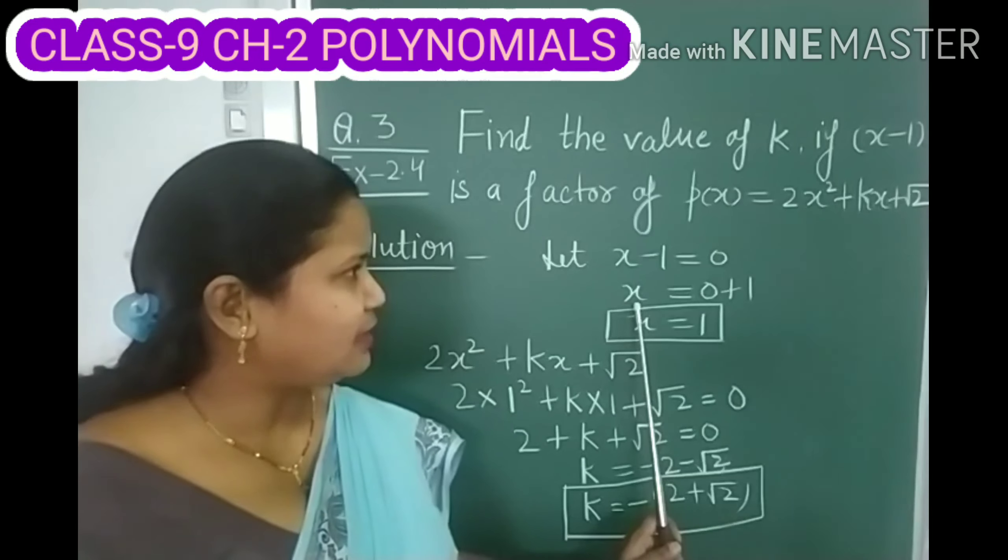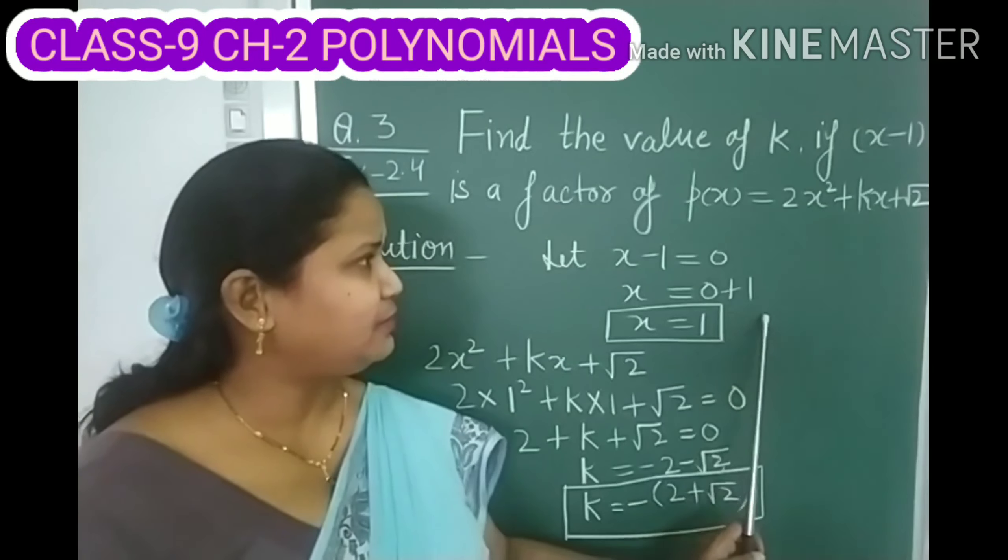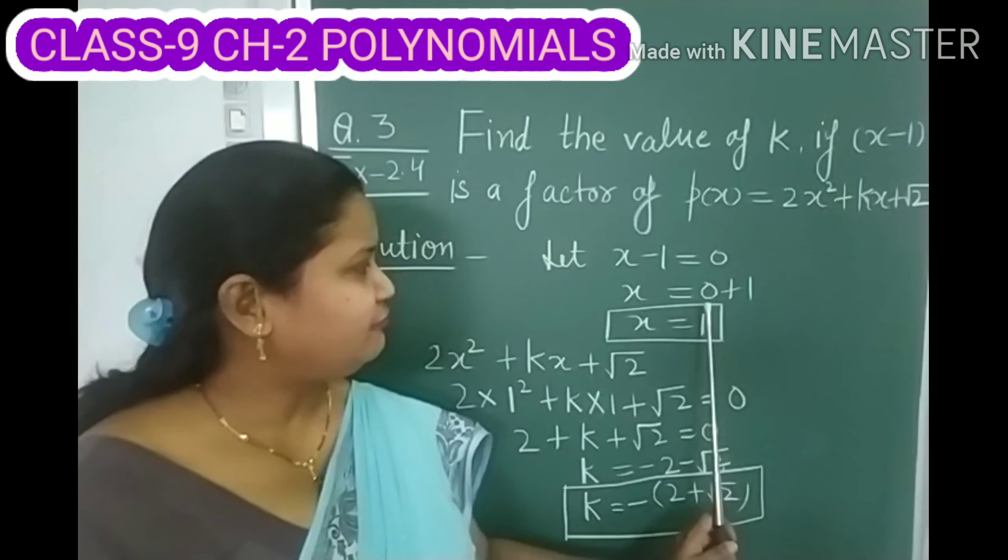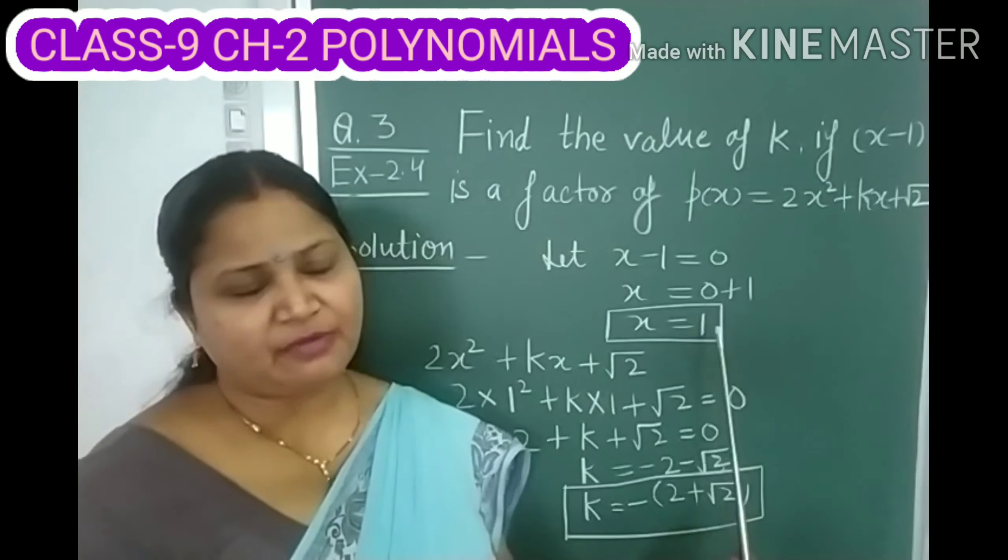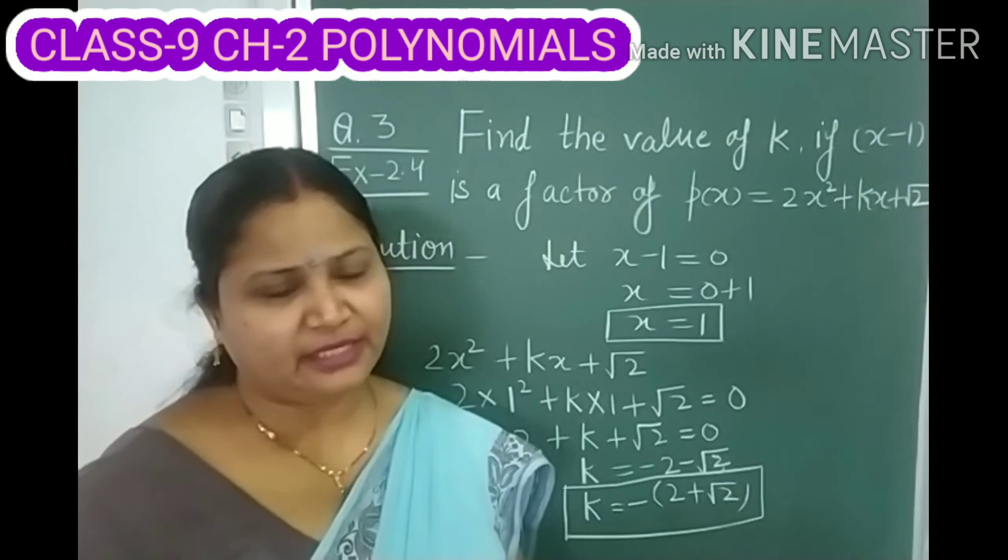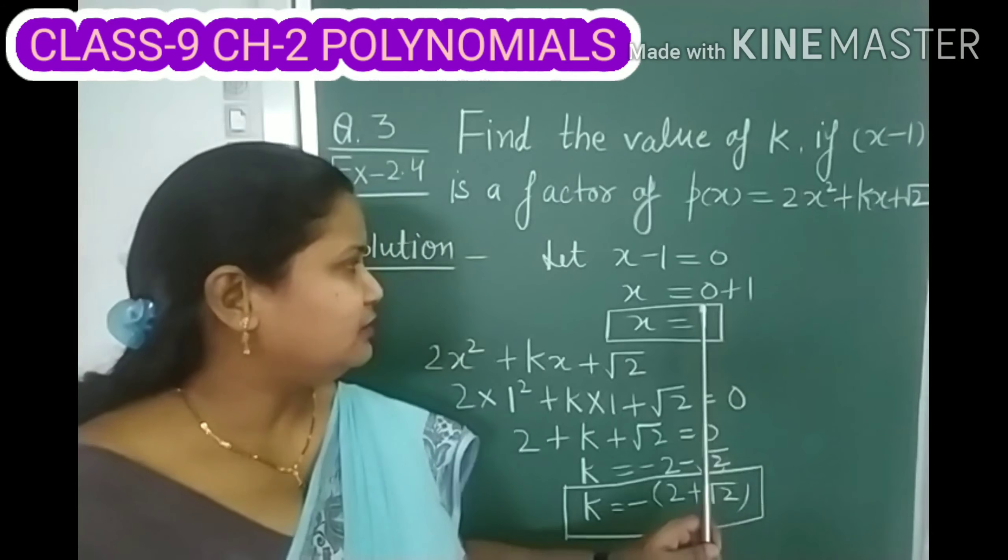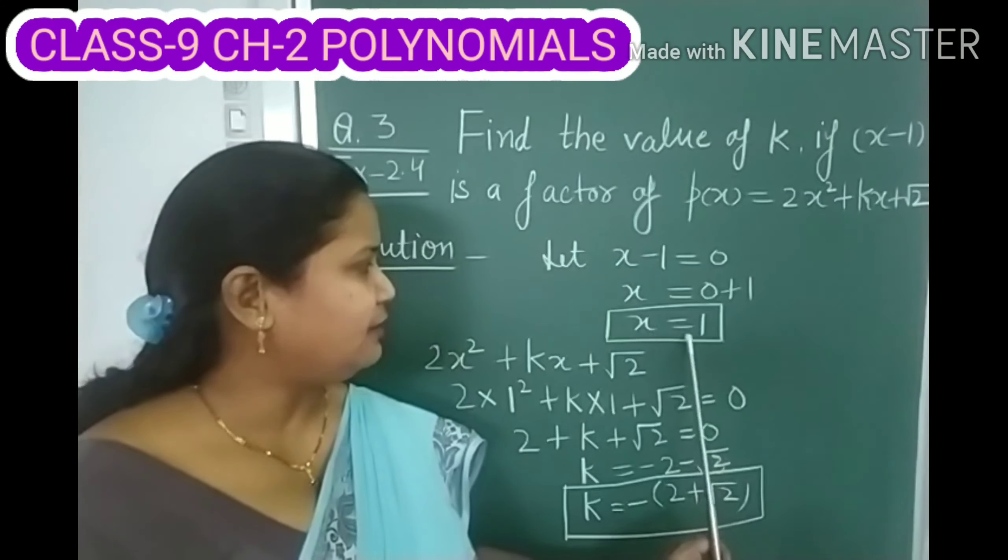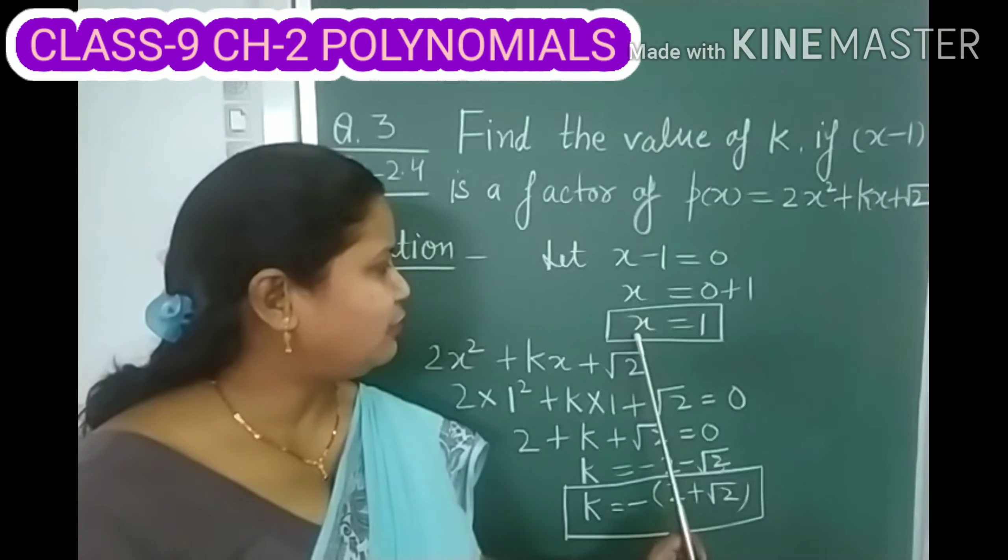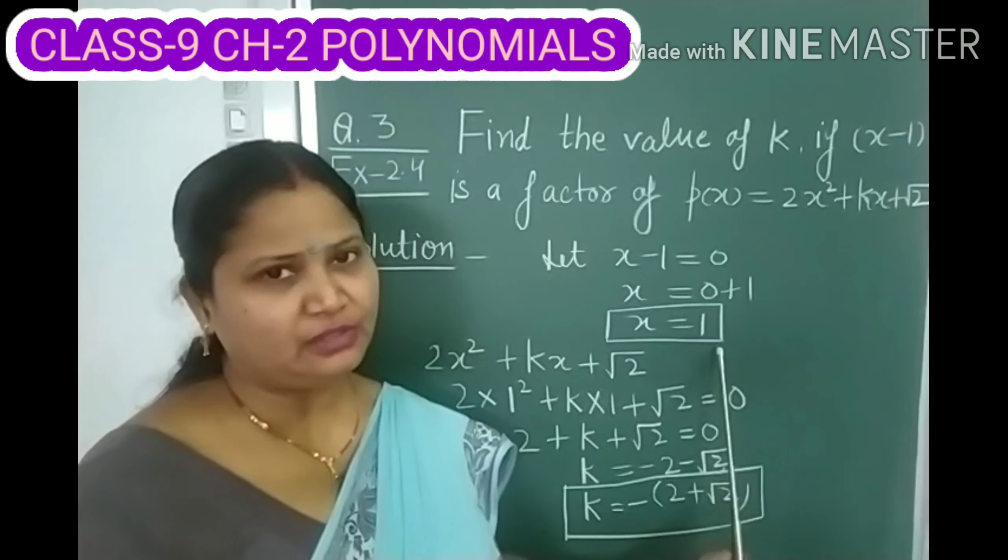Now, if we add 0 plus 1, then by the identity of addition of 0, 0 plus 1 becomes 1. So value of X comes here equals to 1.